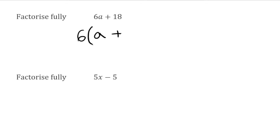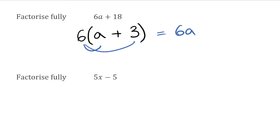So now we open the bracket and see what we need to multiply by. We need 6a, which is 6 multiplied by a, so I put an a there, then plus. We need 18, which is 6 multiplied by 3, so I put a 3 there. We can expand it to check: 6 multiplied by a gives 6a, and 6 multiplied by 3 gives 18, so plus 18 — getting us back to where we started, confirming the answer is correct.